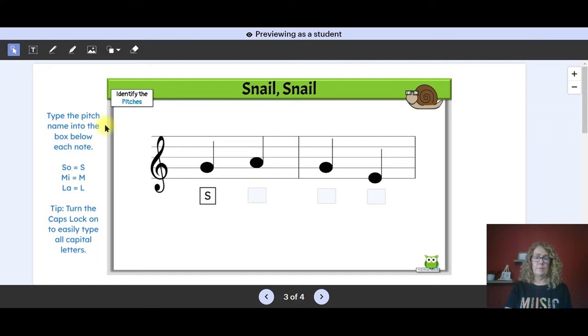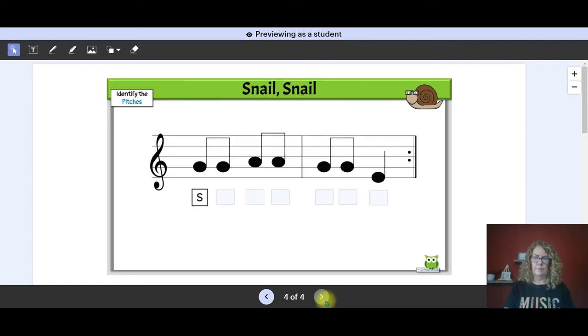On this page students are identifying pitches. They'll type the pitch name into the box below each note and we're using abbreviations that you can see here. I have my kids always turn on caps lock and that makes it easy to type capital letters. So they simply click into the box and type the answer. If they make a mistake you simply hit the back button and they can fix that.